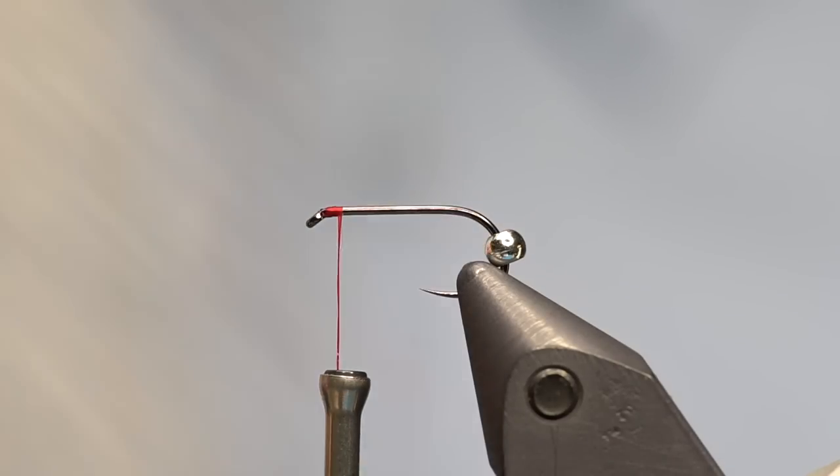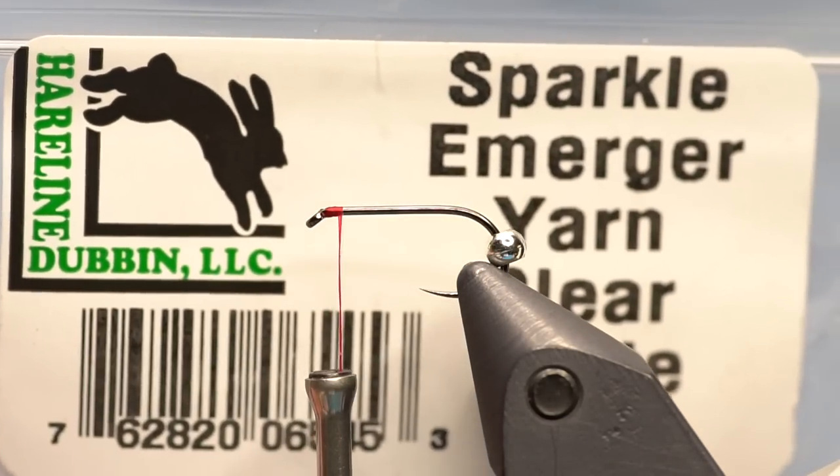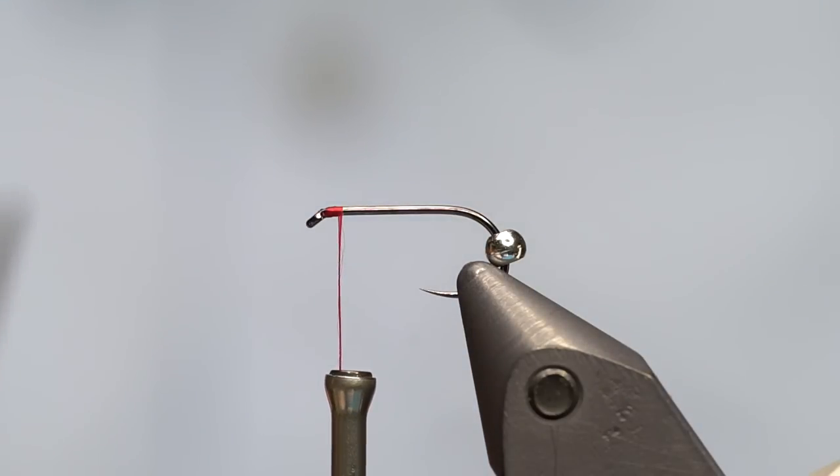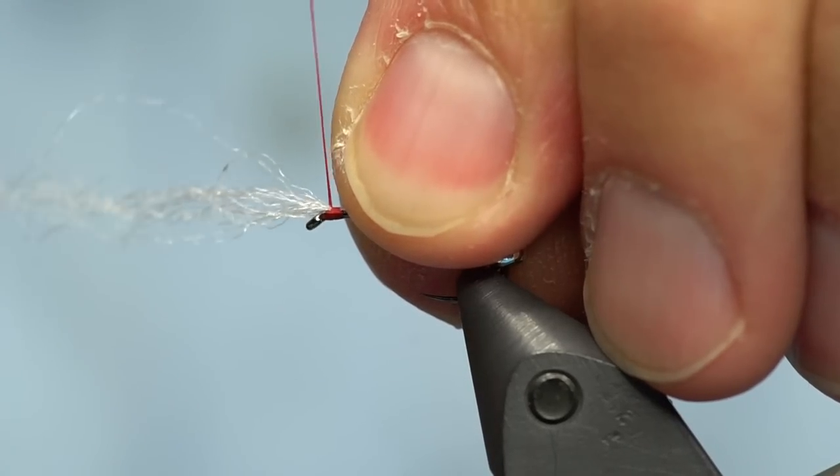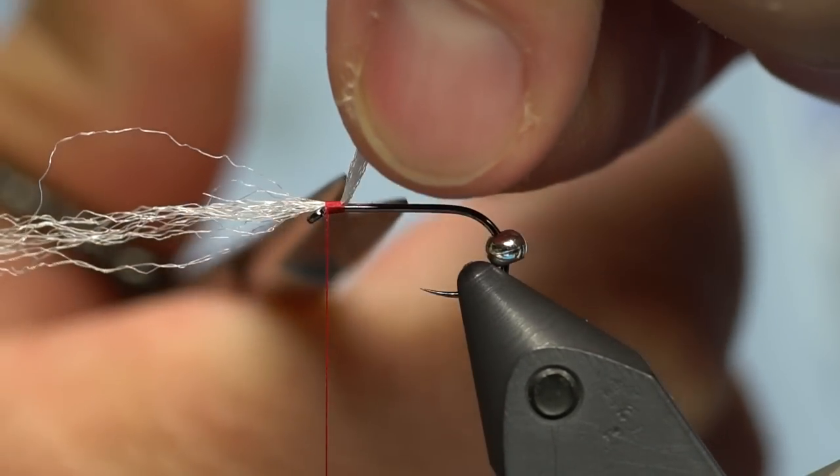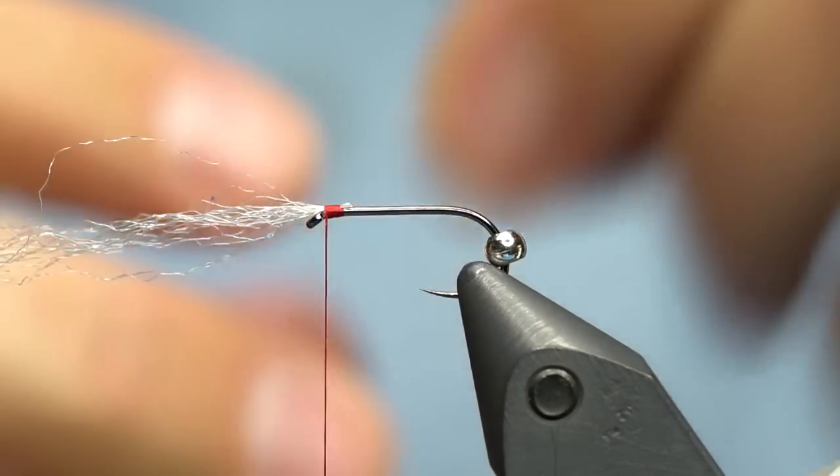I'm going to tie in some sparkly merger yarn in clear white and latch it in right behind the eye. This is one of those where the less wraps you can make the better, because we're going to have to slide the bead back over there.